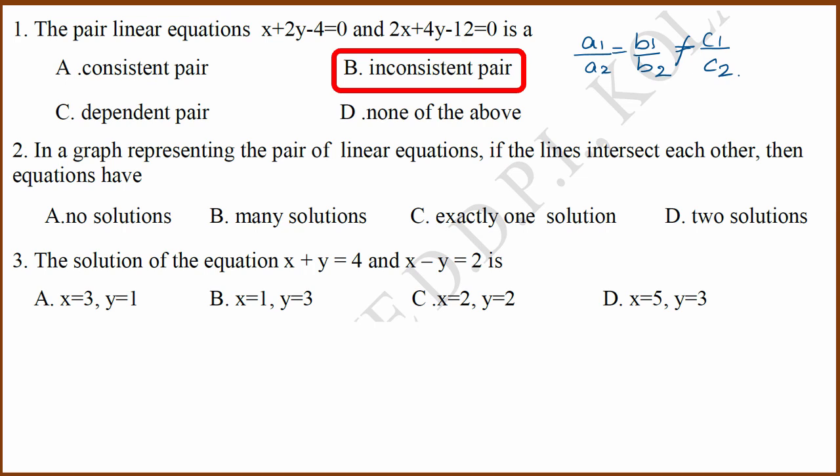Second question is about pair of linear equations. If the lines intersect each other, then what happens? If the lines intersect each other, that means they have exactly one solution. If they are on top of each other, then they have many solutions. If they are intersecting with each other, they have just one solution.